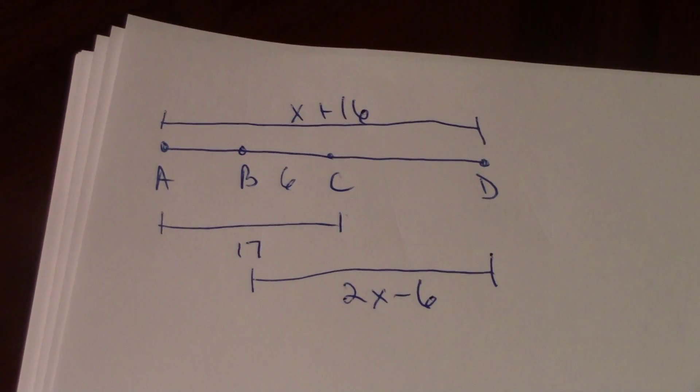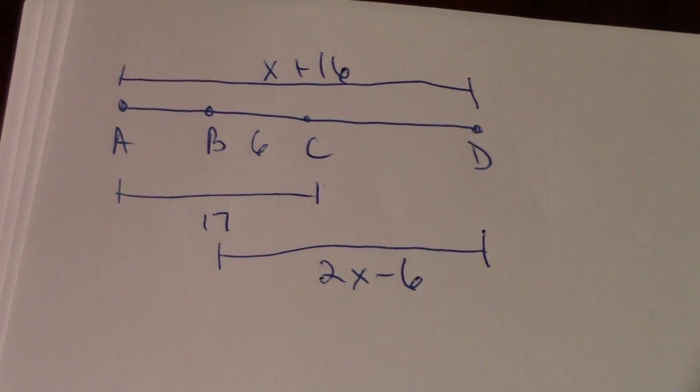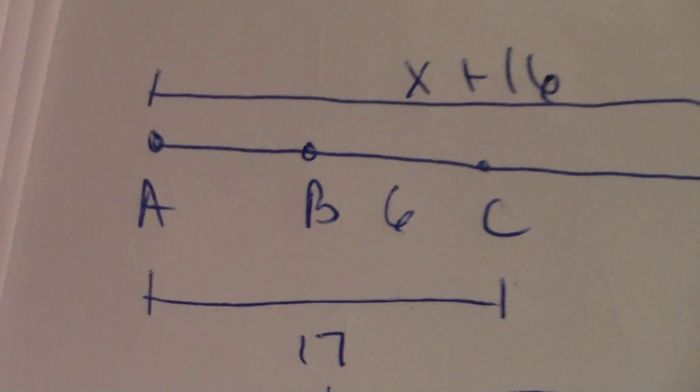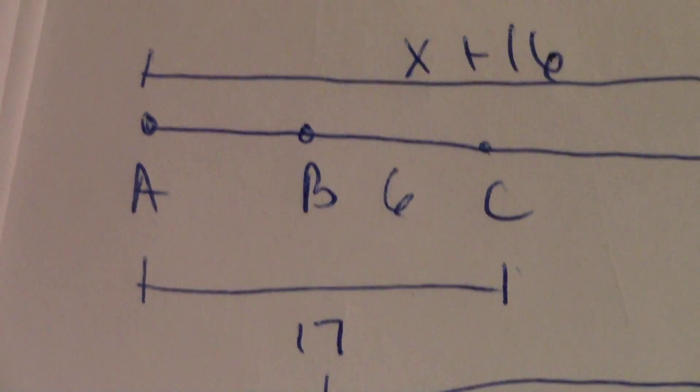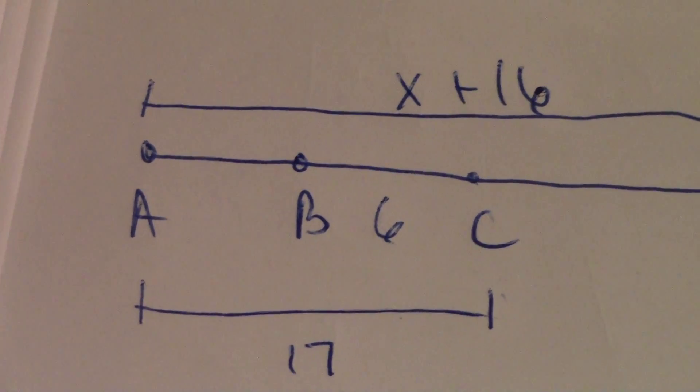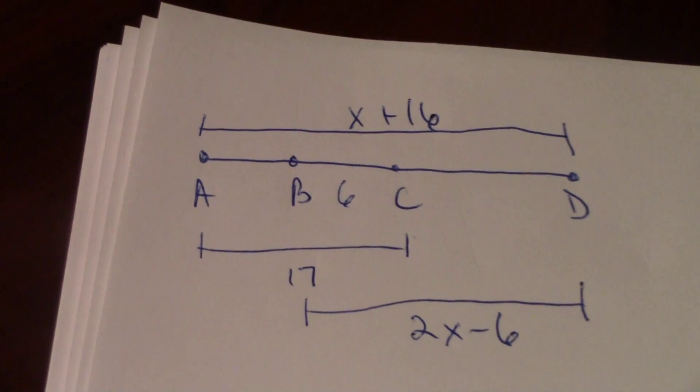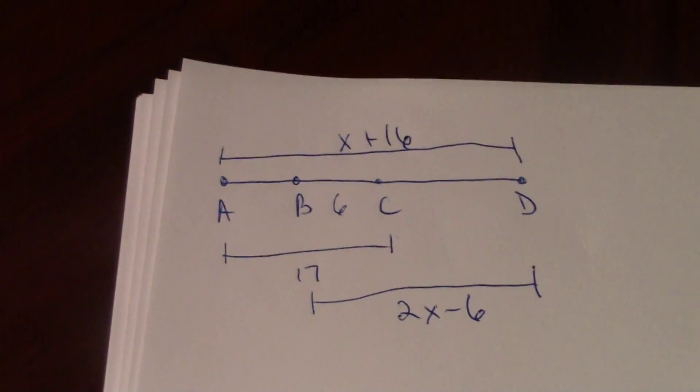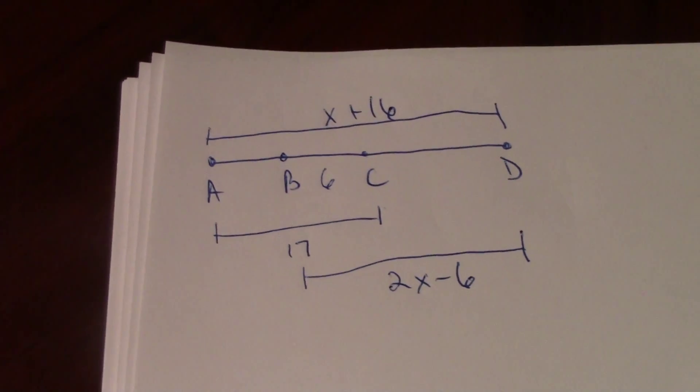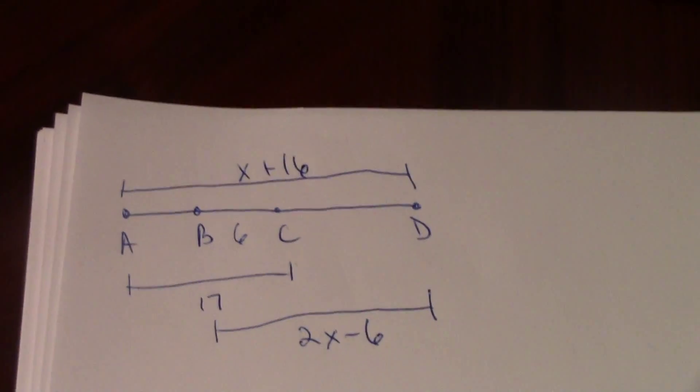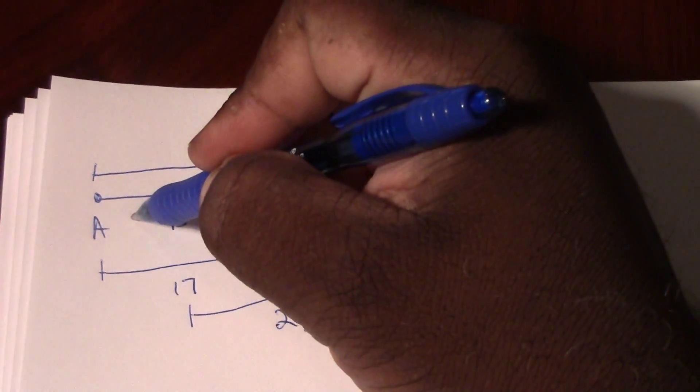First off, we can figure out that if BC is 6 and AC is 17, then that would mean that AB is going to be 11 units. We simply subtract 17 minus 6, and AB should equal 11 units.